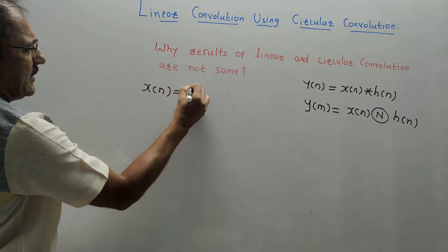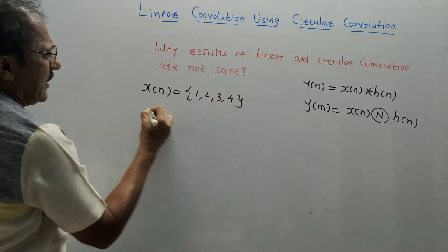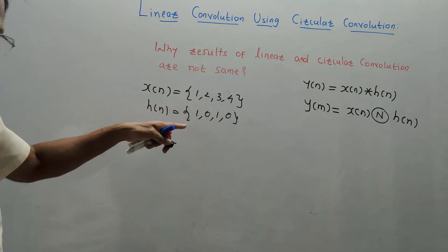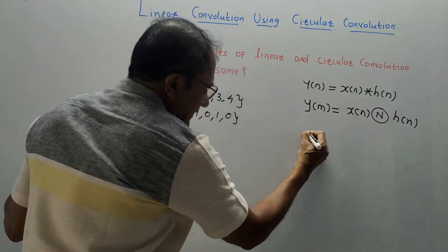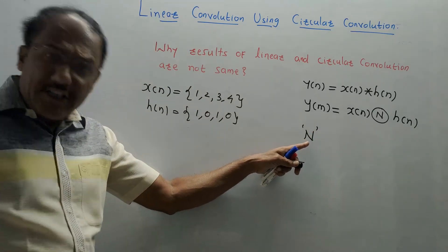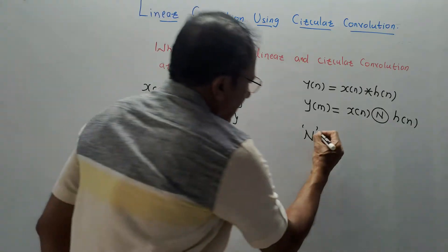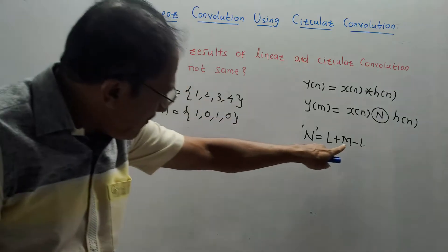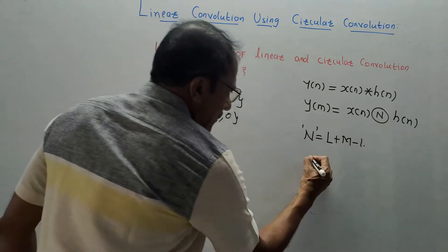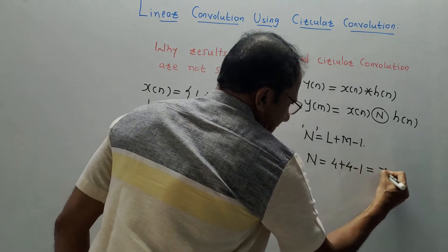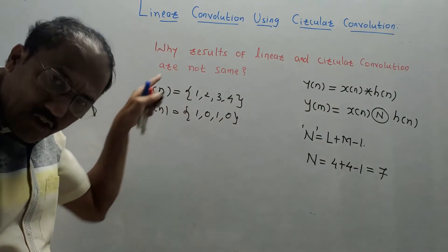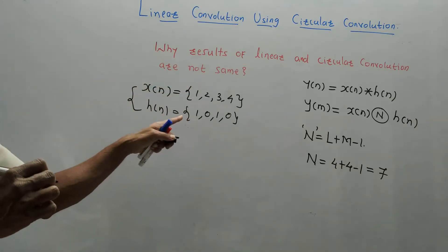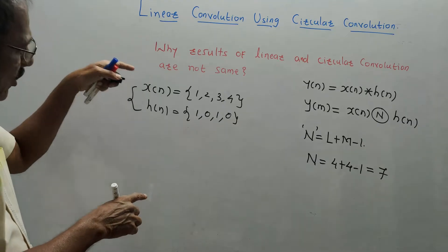Suppose there are two sequences: x(n) = {1, 2, 3, 4} and h(n) = {1, 0, 1, 0}. If you perform circular convolution, the answer contains N number of samples. The result of linear convolution is given by N = L + M - 1, where L is the number of samples in x(n) and M is the number of samples in h(n). Putting in the values: 4 + 4 - 1 = 7. So linear convolution gives 7 samples.